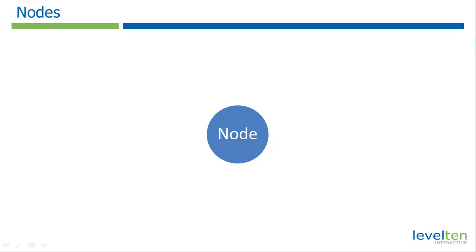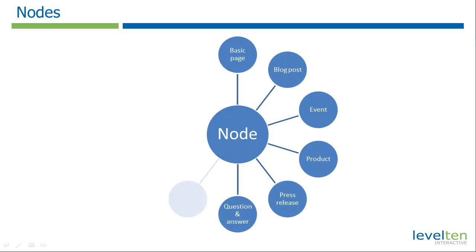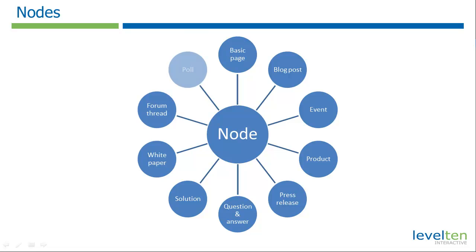Every node on your site has a type. You'll likely have many different types of nodes, such as blog posts, product pages, or press releases. Node types are a little bit like templates in a word processor. Many popular word processors offer templates such as letters, business cards, memos, invitations, and so forth. Nodes are similar — they're a way of formatting content to better fit a specific role.